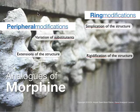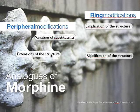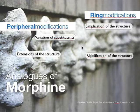There are five rings. The ring modifications are on morphine. Under the peripheral modifications, there would be the variation of substituents — so you remember that the different substituents are being changed — and also the extension of the structure. Under the ring modification would be the simplification of the structure, meaning the removal of the rings, and that would result in different families of morphine derivatives. And also the rigidification of structures.